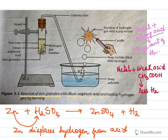Now we'll see what happens when a metal reacts with a base. For example, we'll take metal zinc.